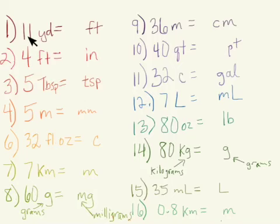Starting with number one. Eleven yards is how many feet? We know that one yard contains three feet, and yards are bigger than feet. So eleven is going to be little and our other number for feet is going to be big. Eleven times three is thirty-three.